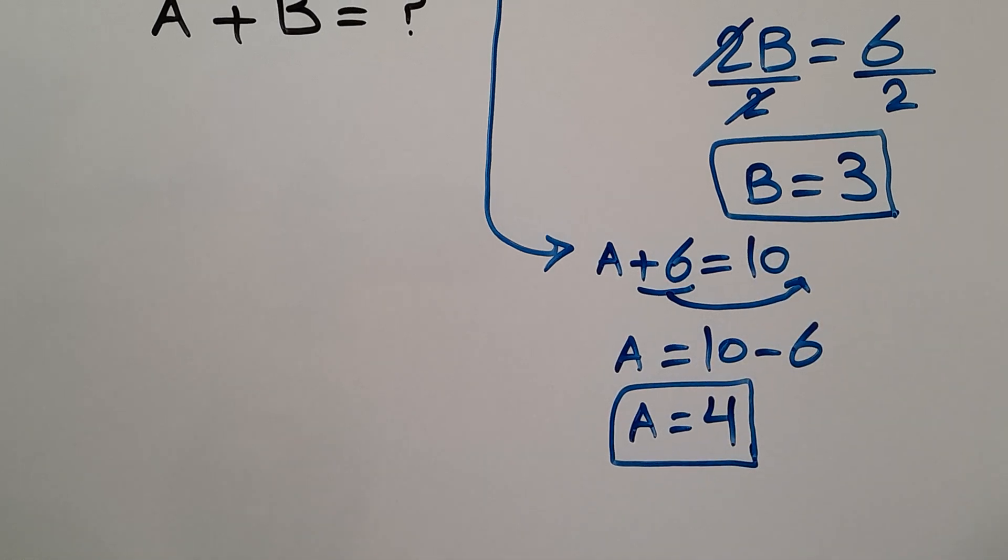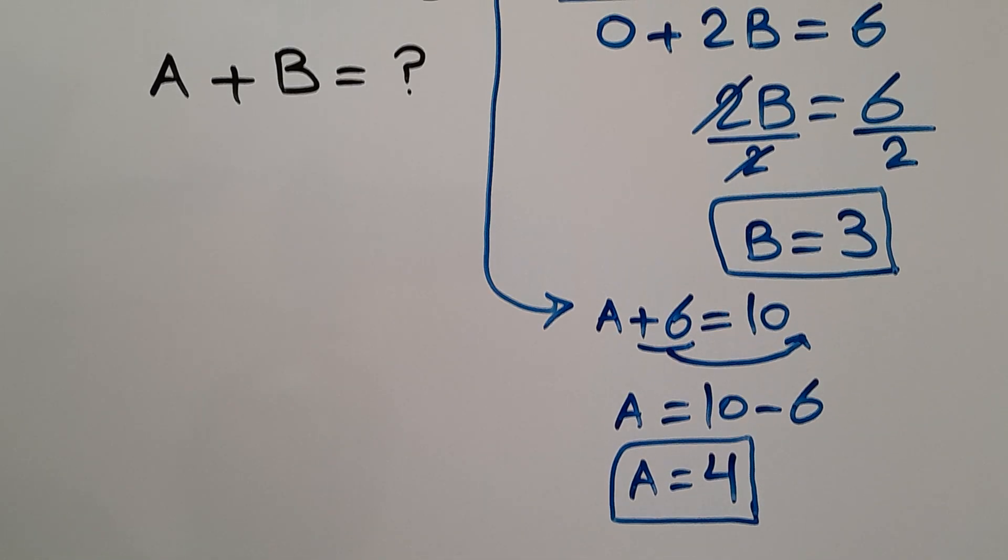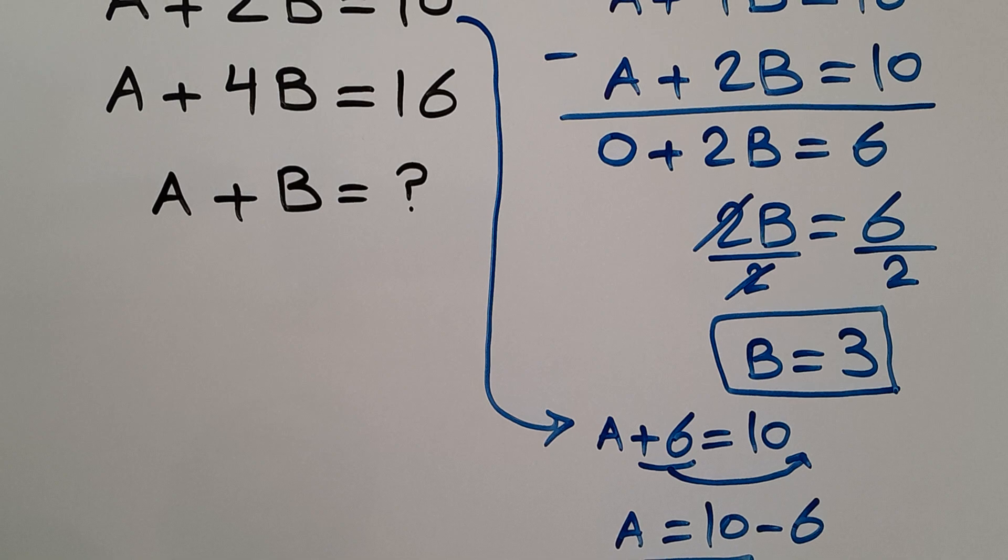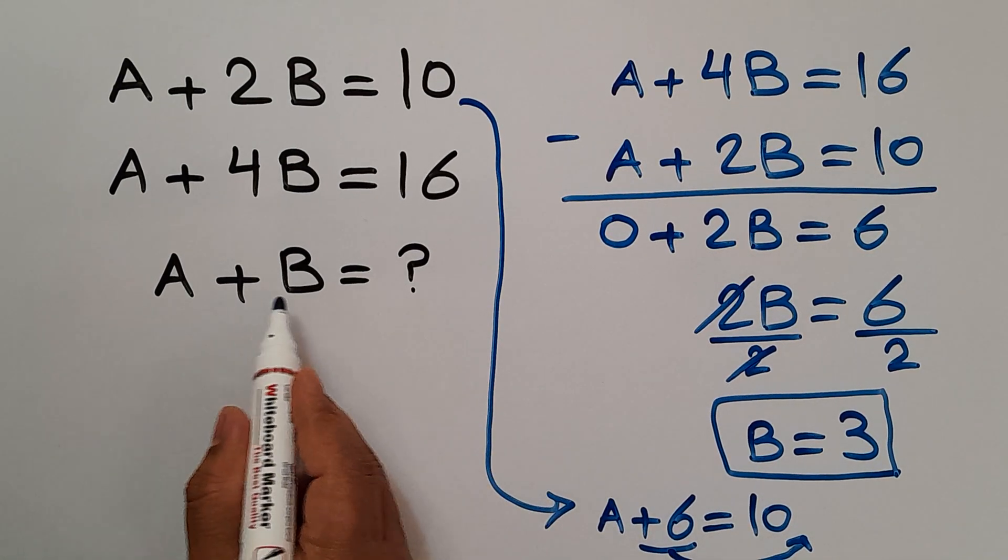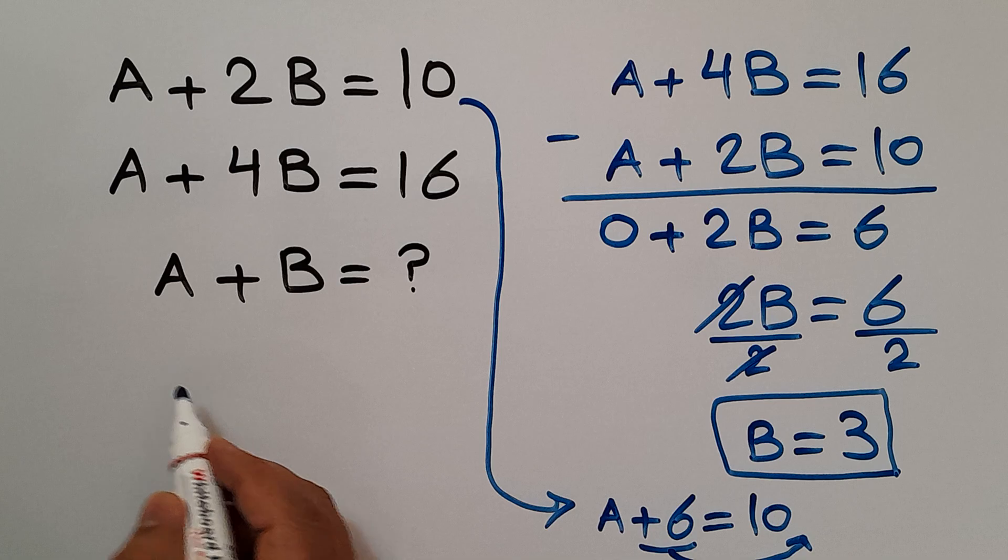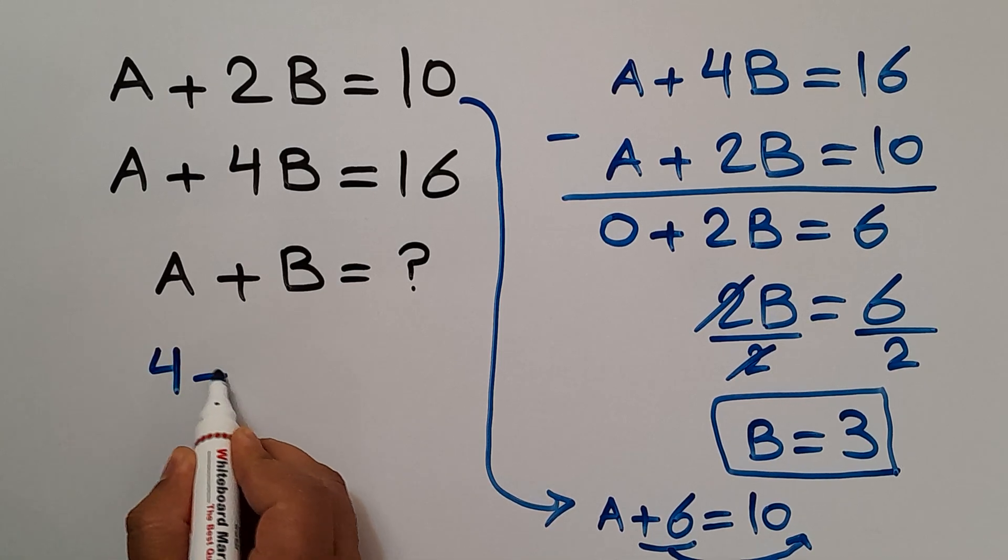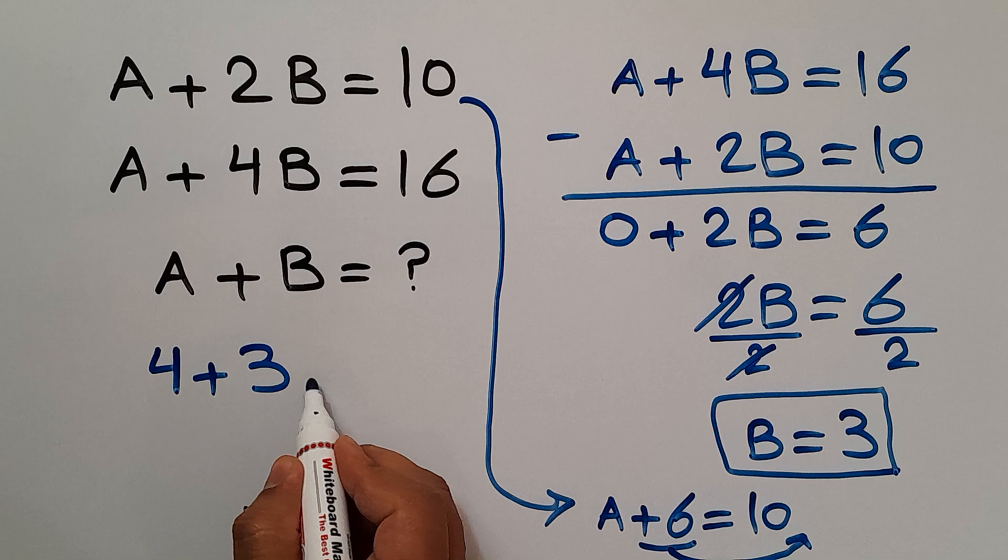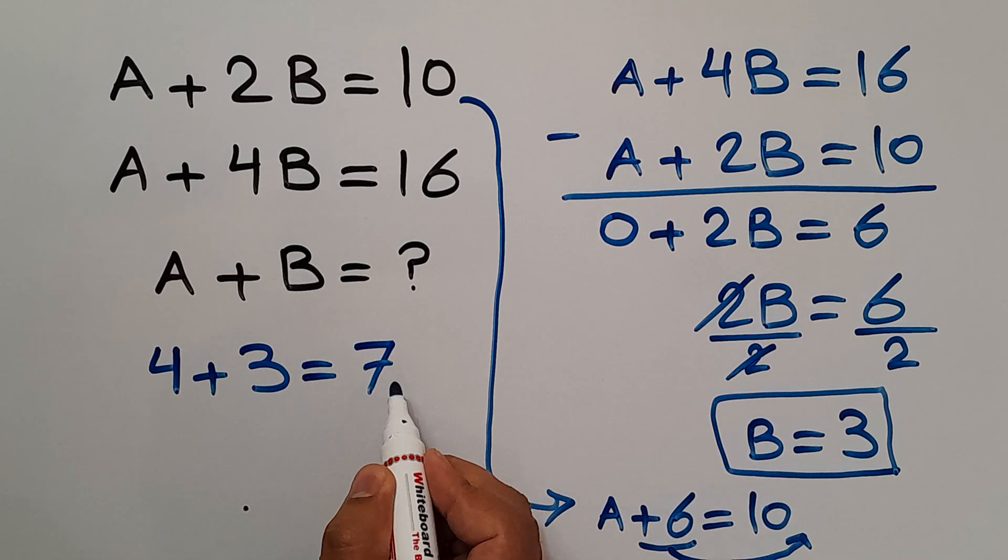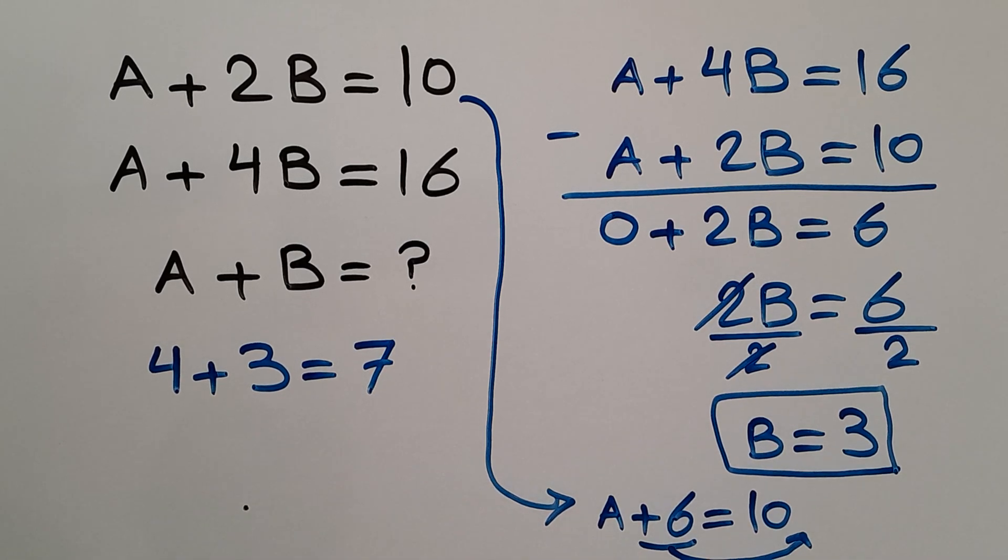A is 4 and B is 3. Now let's plug these values we got for A and B into the third equation: A plus B. Okay, A is 4 and B is 3. 4 plus 3 gives us 7. So our final answer to this problem is just 7.